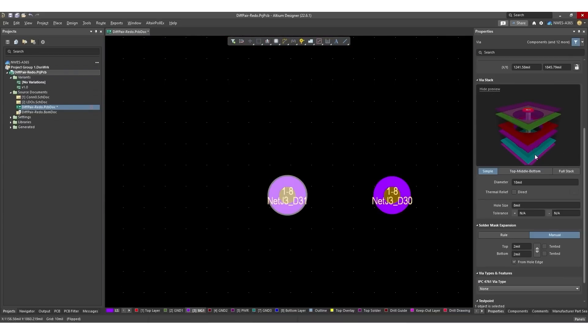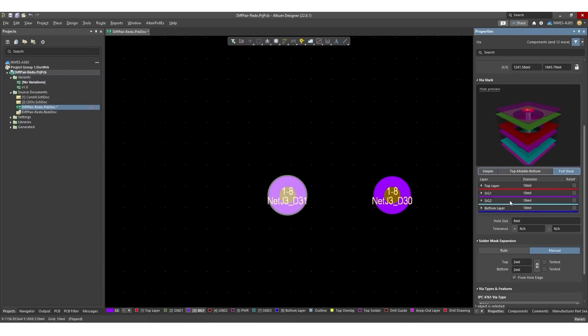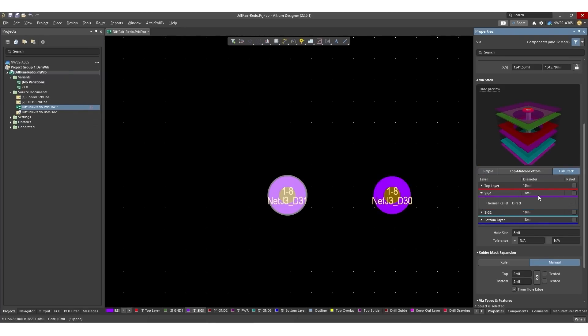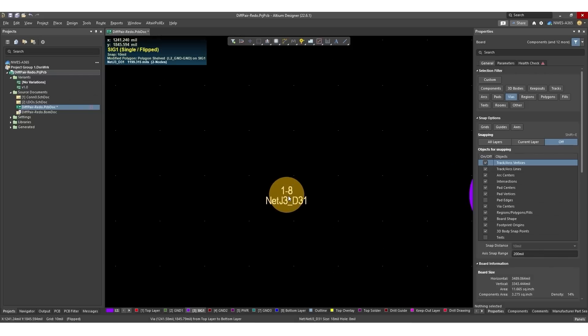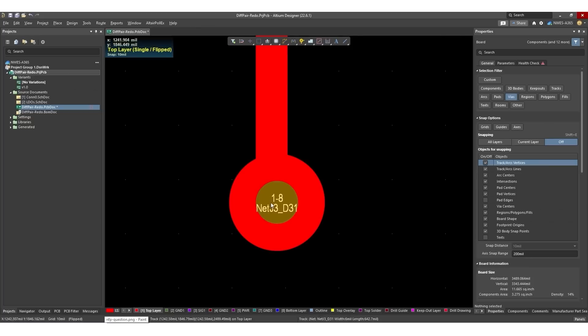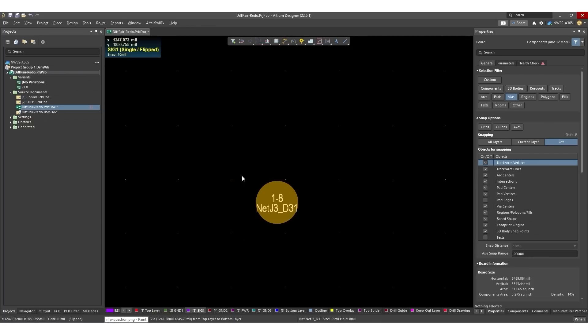Here, all I need to do is just select this. And then here in the properties panel, you'll see this area where it says via stack. So by default, simple will be selected. And when you have simple selected, the diameter that you set here is going to apply to all layers. In order to configure this, what I can actually do is go over to full stack. Now here with full stack, what I can do on, let's say, SIG1 is I can actually change this so that the diameter matches the hole size. And then if I do that and hit enter, you will see that now I'm just left with a hole here. And then this hole matches up with this pad that's on the top layer. So we just have a pad up on the top layer.